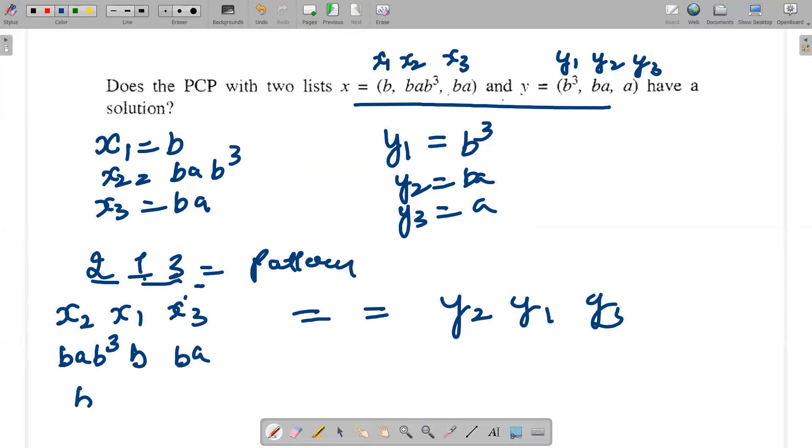The answer we are getting is bab⁵a. Let's see whether we get that as an equal answer for y2, y1, y3, which is ba, then b³, and a. So we get bab³a. Is bab⁵a equal to bab³a? Definitely it is not.